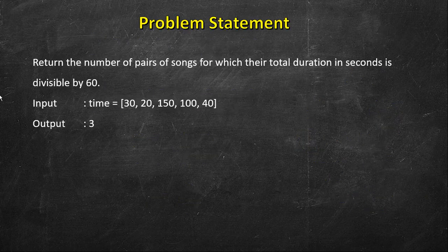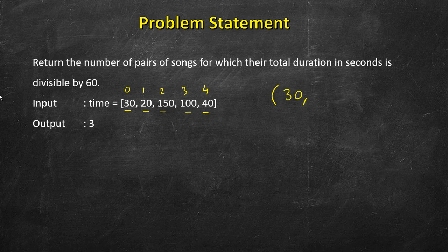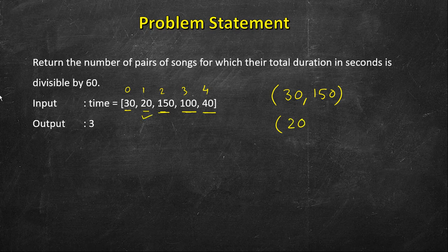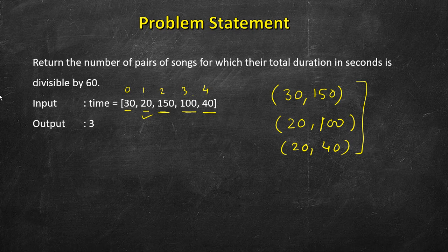Let's see an example. We have 5 songs at indices 0 through 4. If we add 30 and 150, the sum is 180, which is divisible by 60. We cannot pair 30 with other songs: 30 plus 20 is 50, 130 is not divisible, 70 is not divisible. For 20, we can pair it with 100 and also with 40. So there are three valid pairs in total.